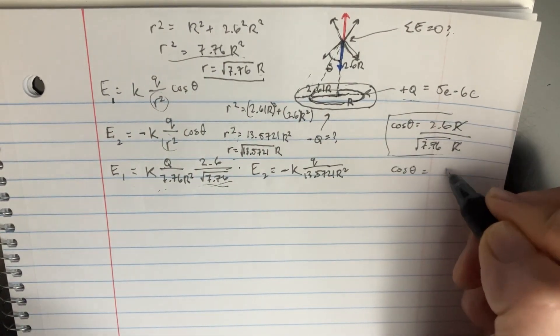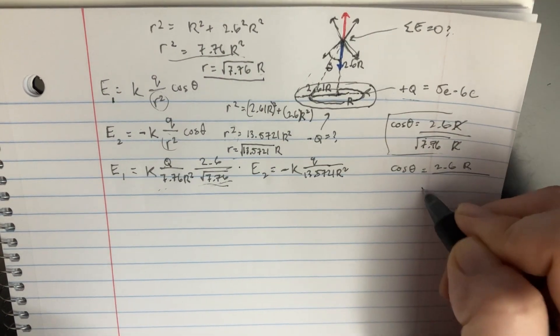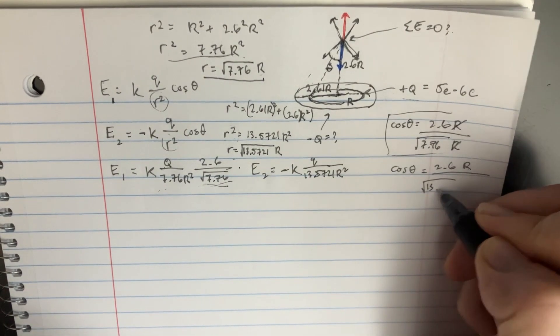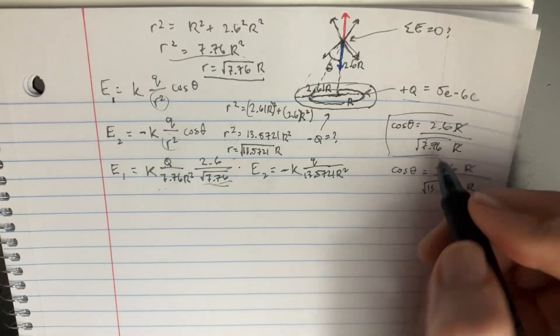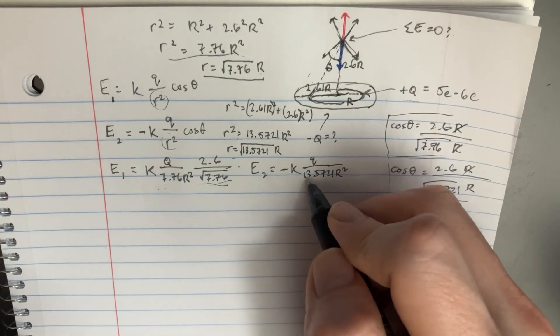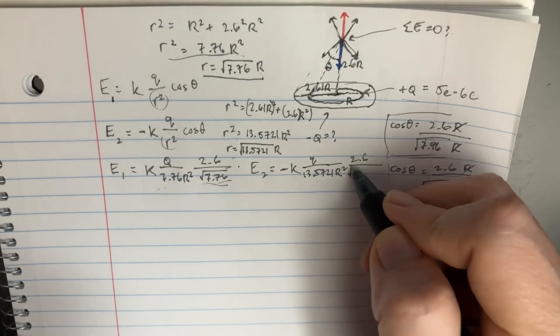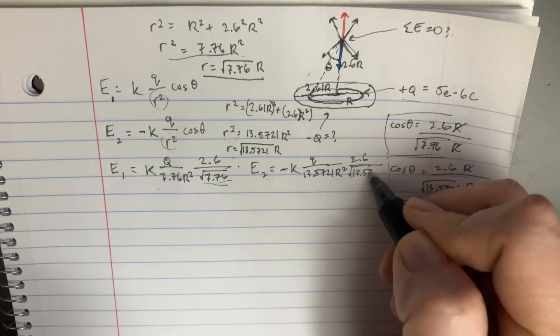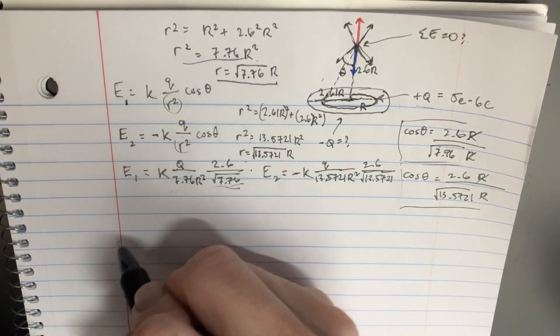Cosine theta is going to be equal to, again, 2.6 r divided by, this time it's the hypotenuse, this is 13.5721 r, these will cancel, and you'll be left with this. So this is what you plug in over here, 2.6 divided by square root of 13.5721. So the idea is that we're supposed to add these two together...